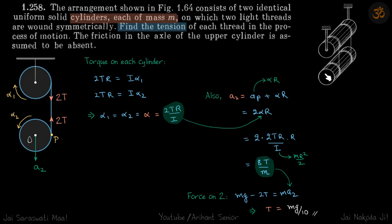We are given two cylinders connected by two threads. We need to find the tension in each thread. Let's say the tension in each thread is T, so the combined tension will be 2T.